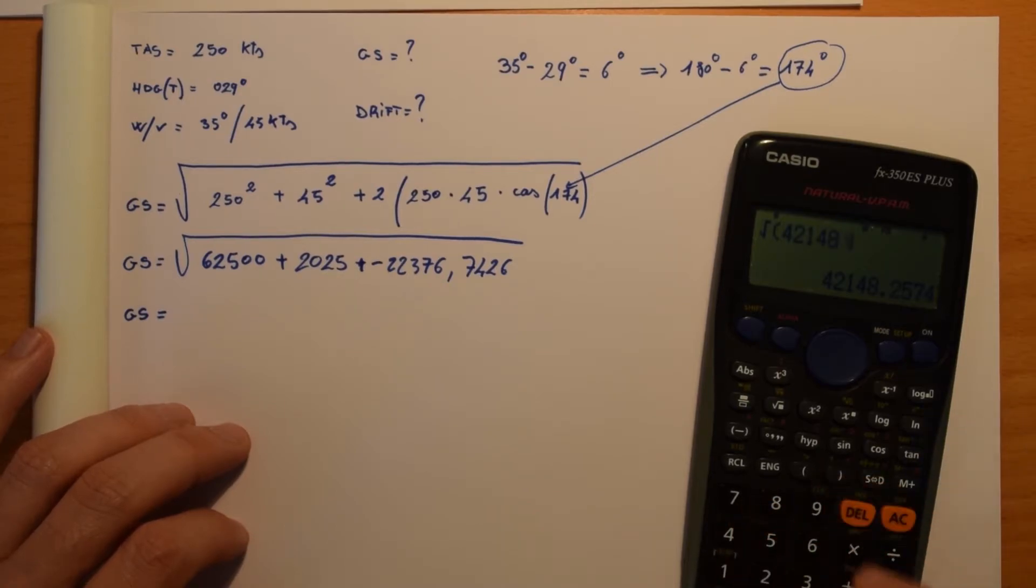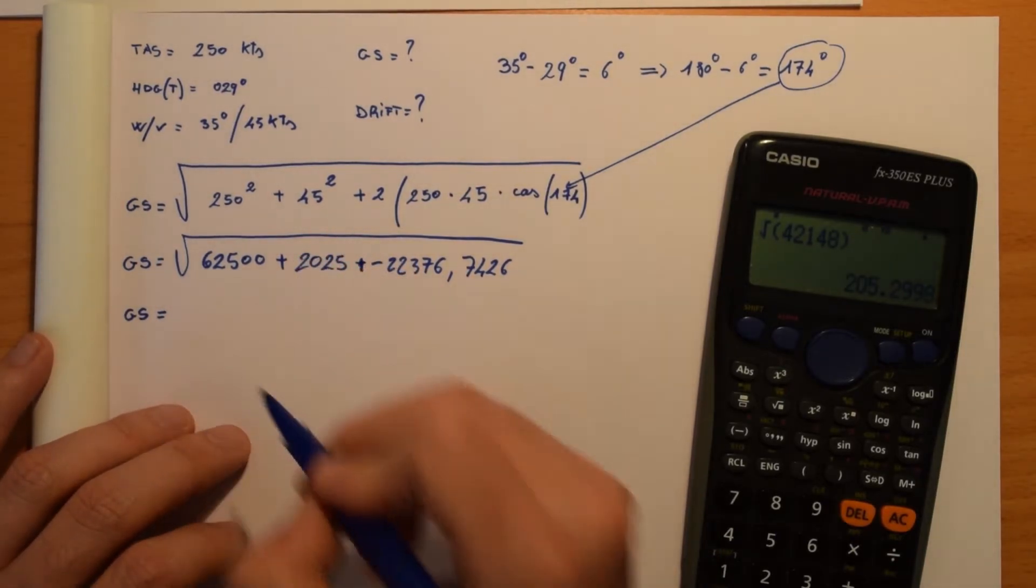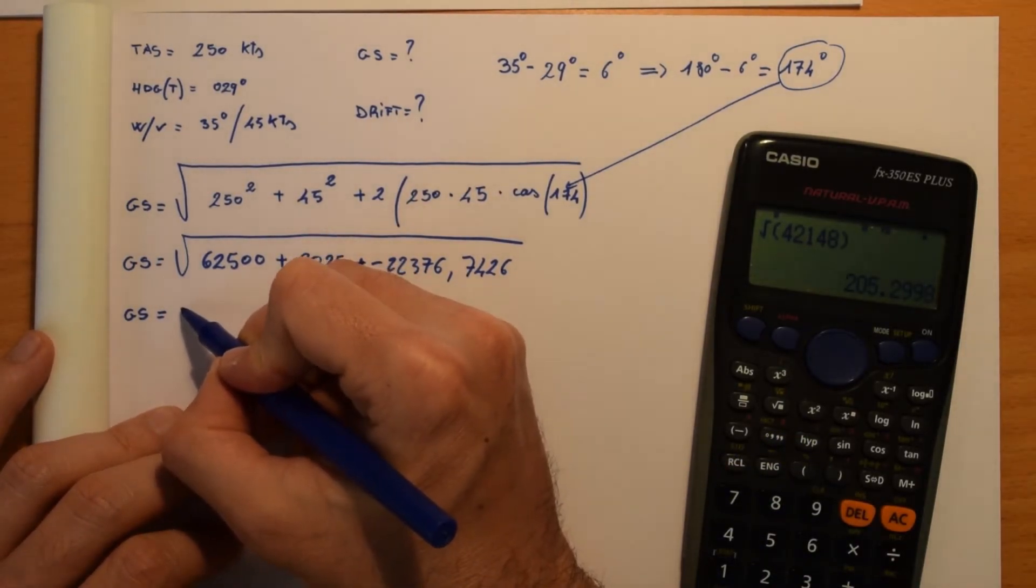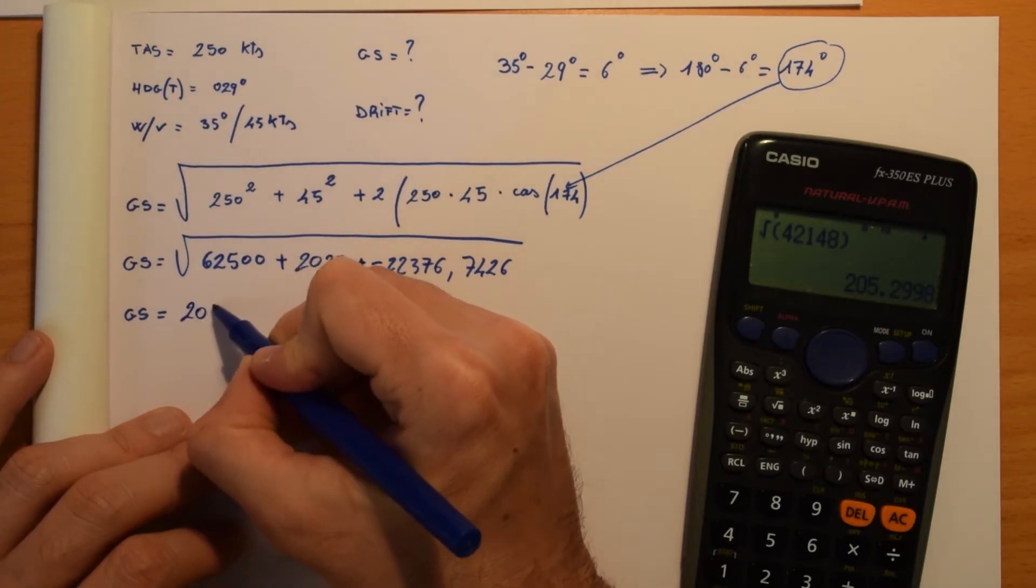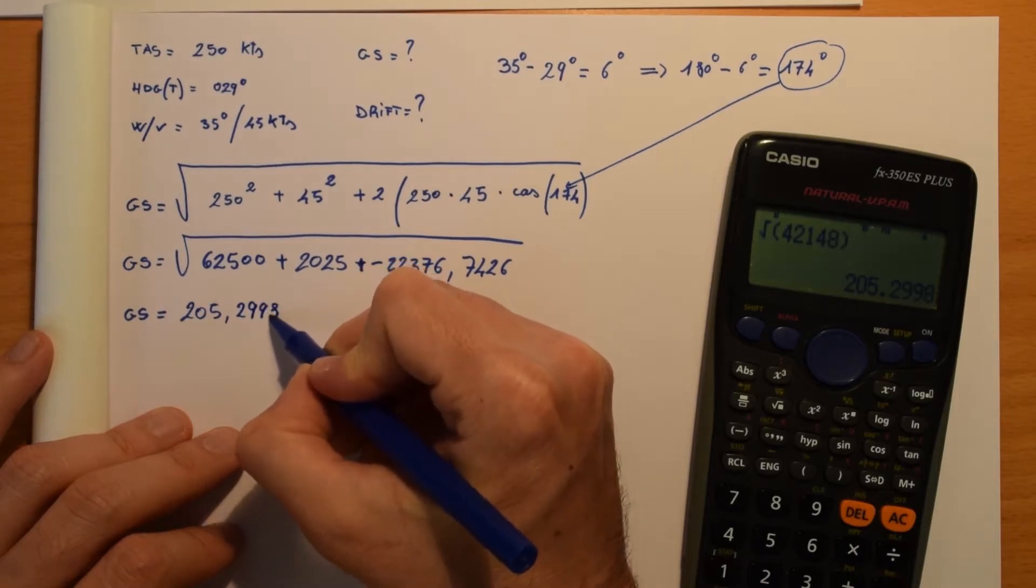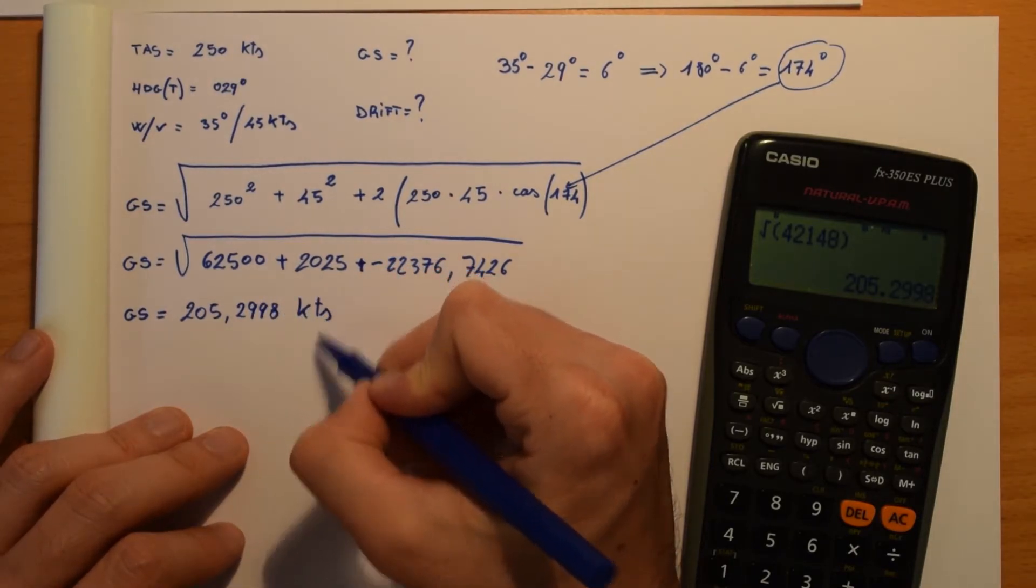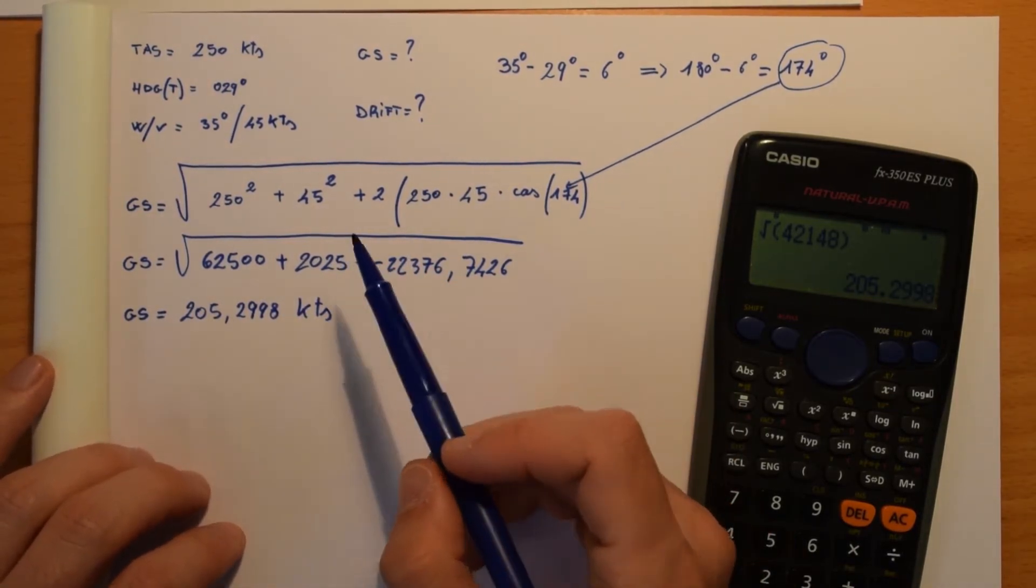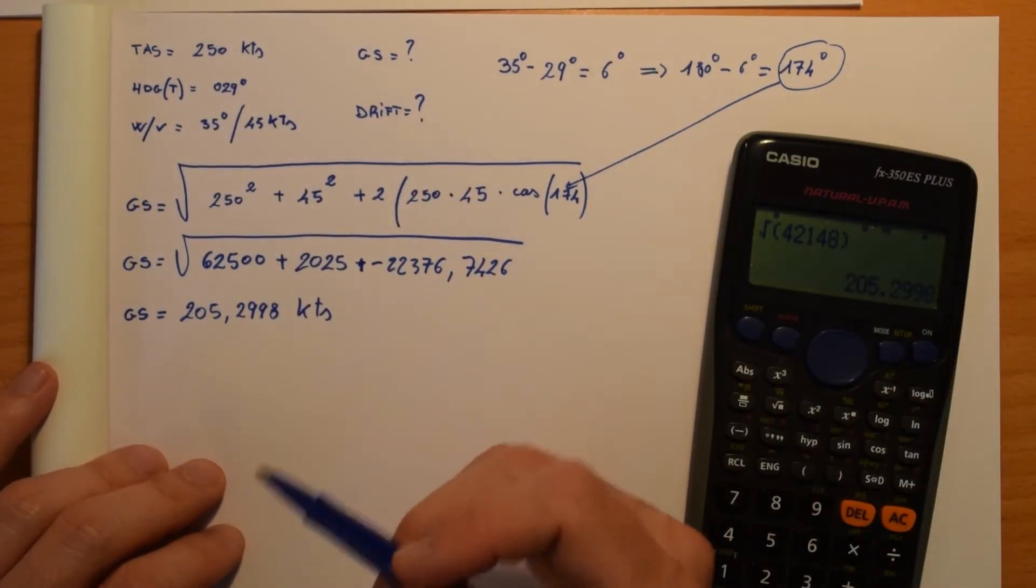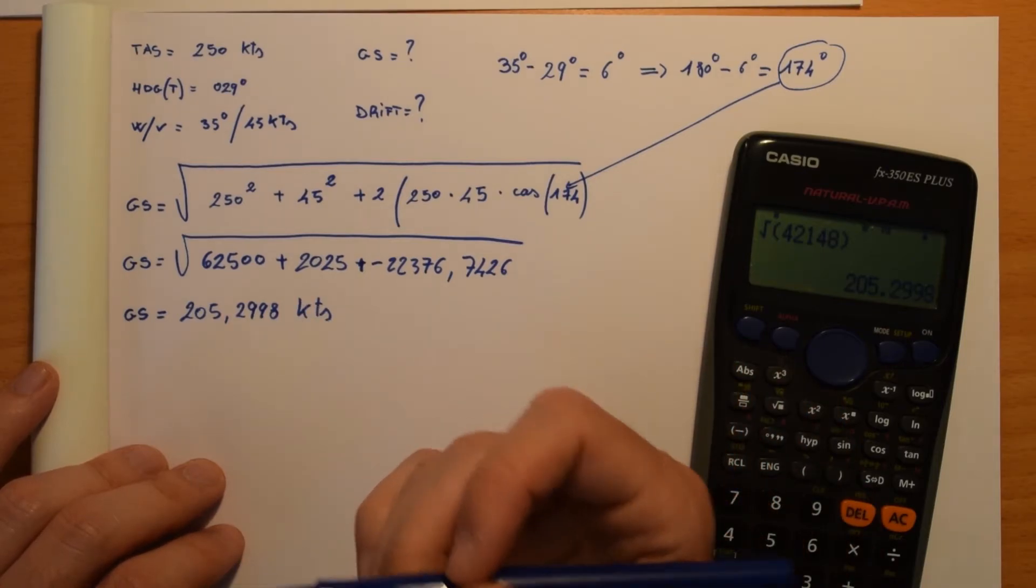Here we go. So now we got the ground speed, so the ground speed is 205.2998 knots. So this is going to be the ground speed in this situation. But this is not enough, this is the first part of the problem. Now we have to face the drift problem.